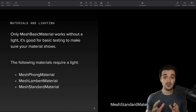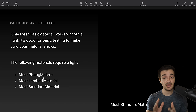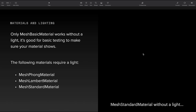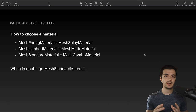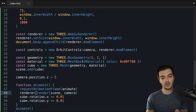It's very important to note that mesh basic material is the only one that works without a light. Phong, lambert, and standard all require a light to work. Without a light, a mesh standard material object is completely invisible — you can't even see it.